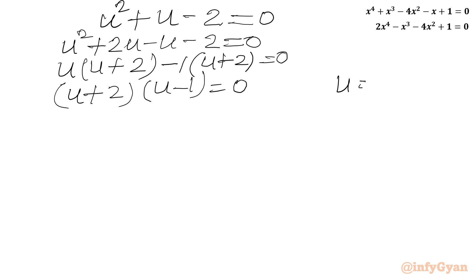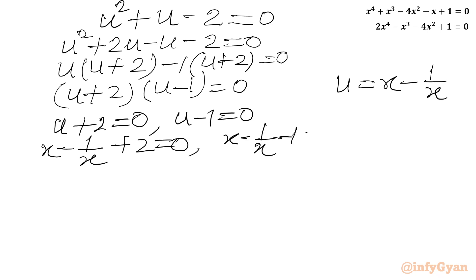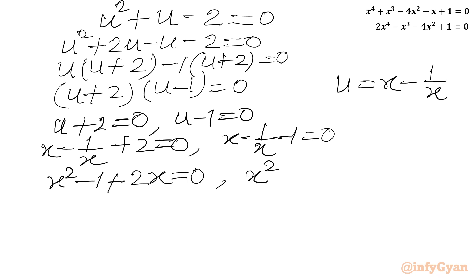Now u was x - 1/x. Applying the zero product rule: u + 2 = 0 gives x - 1/x + 2 = 0, and u - 1 = 0 gives x - 1/x - 1 = 0. Multiplying both equations by x: x² + 2x - 1 = 0 and x² - x - 1 = 0. So our factorization for the first equation is done.